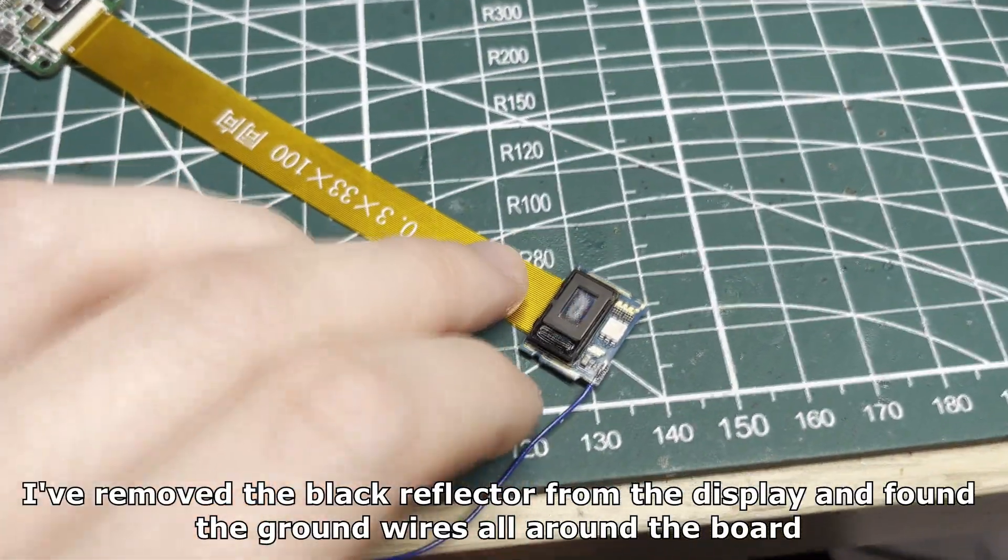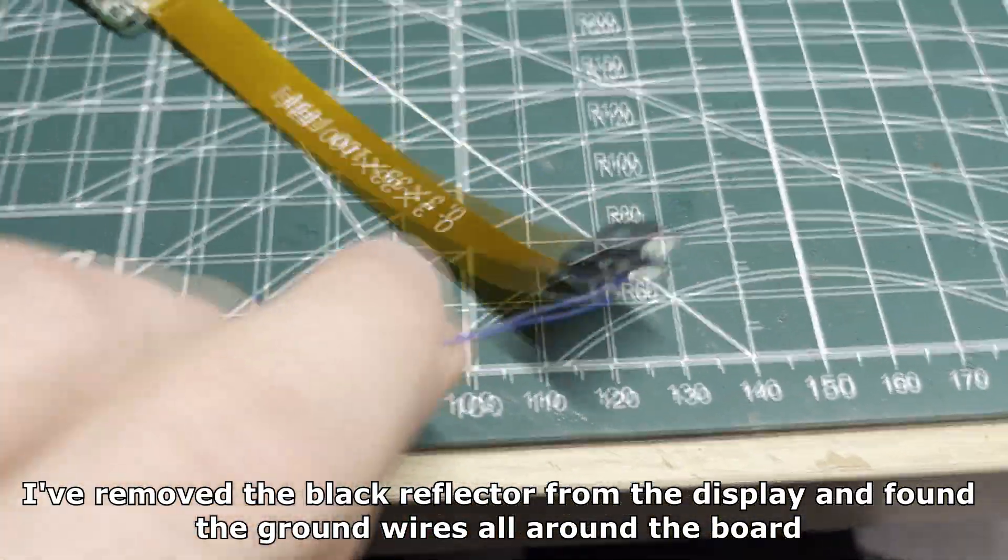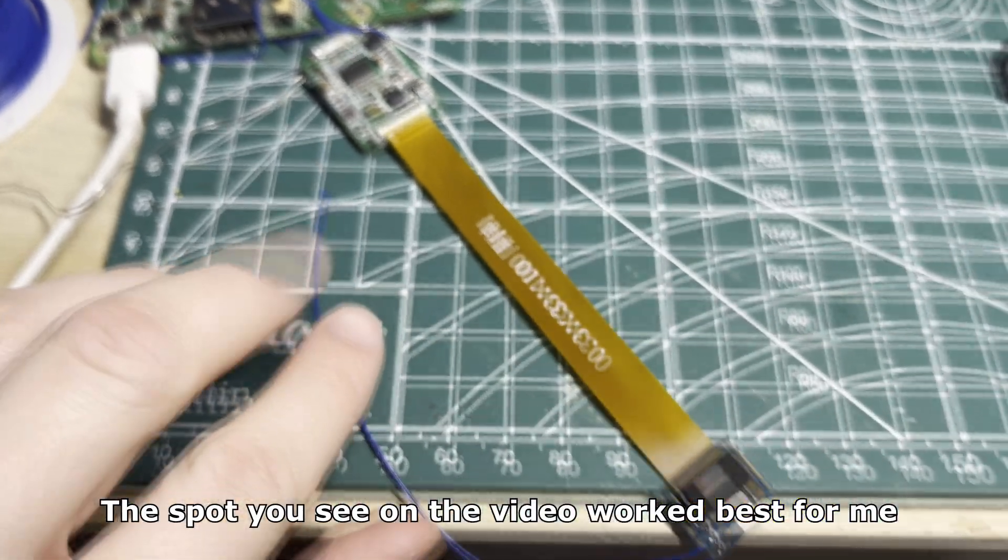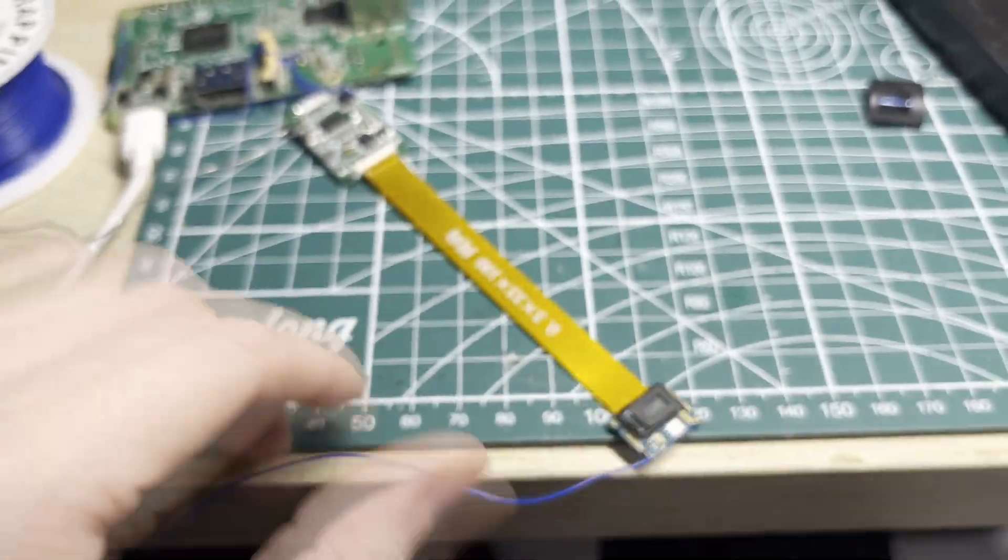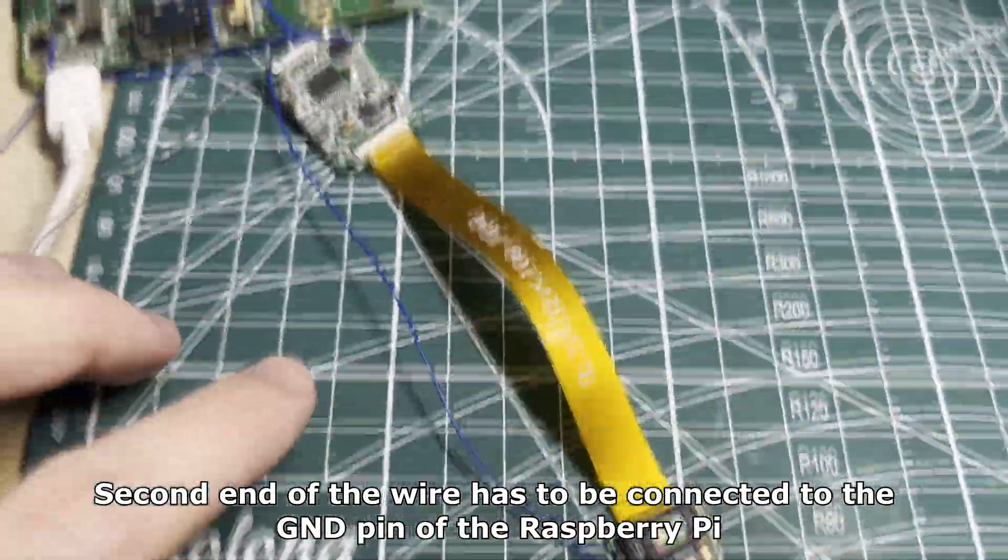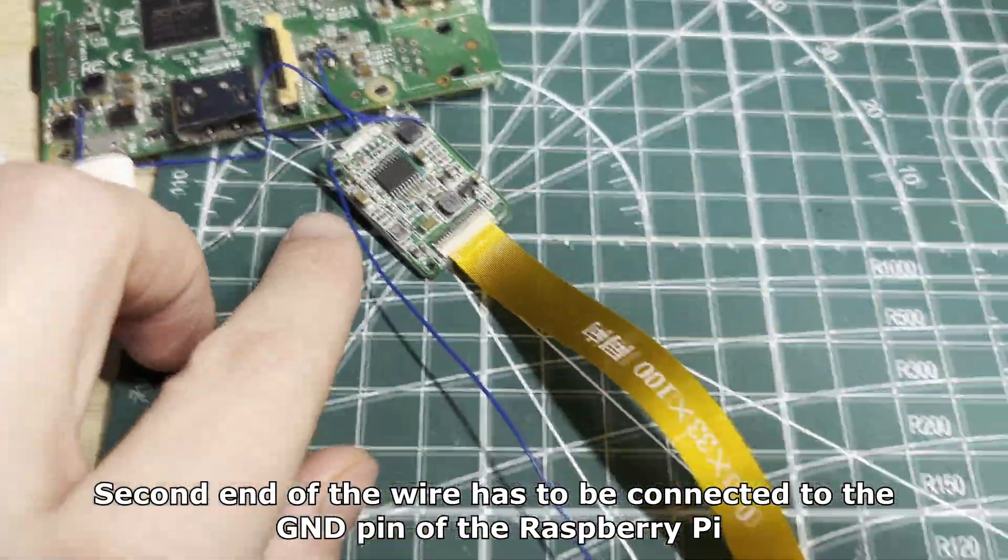I've removed the black reflector from the display and found the ground wires all around the board. This pad you see on the video worked best for me. The second end of the wire has to be connected to the ground pin of the Raspberry Pi.